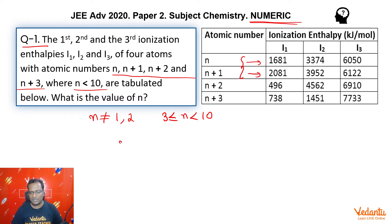Now n plus 2, as you can see 496 to directly 4562, almost this is 9 times. After that you will see that it is not going too high, it is roughly 1.5 times. Now in the next one, n plus 3, here it is again roughly doubling. But after that it is increasing a lot, roughly 5 times.